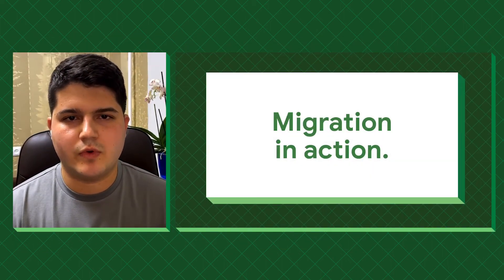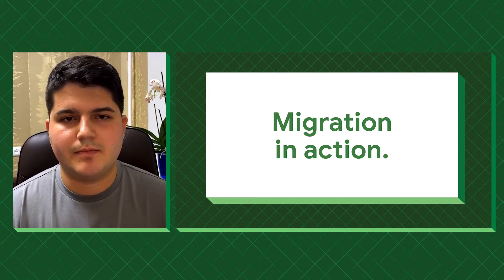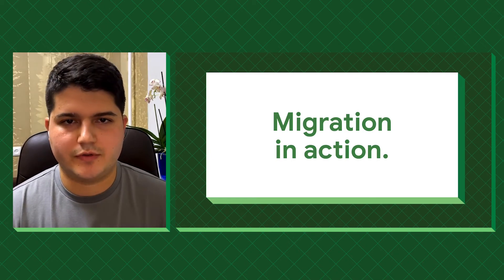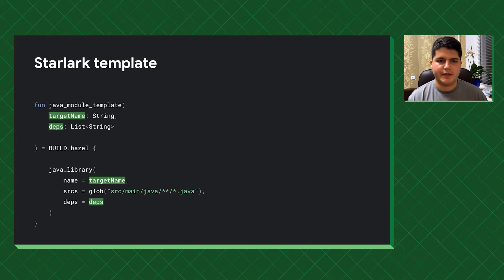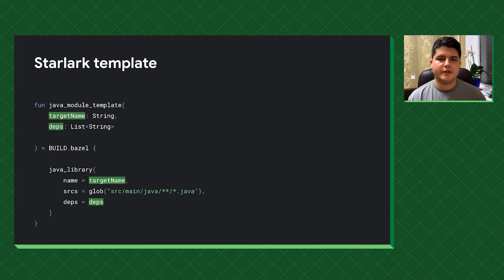Now let's see how IRIN can actually be used to migrate a Gradle project to Bazel. It all starts with defining a template for your modules — in this case, a template for all Java modules — using a regular Kotlin function. You pass arguments specific to each module into that function. Importantly, this code should not be part of the application source but must be on the classpath of the build scripts. In Gradle, the simplest way to do this is to use a buildSrc directory, where Gradle will treat all code as available on the build script classpath.